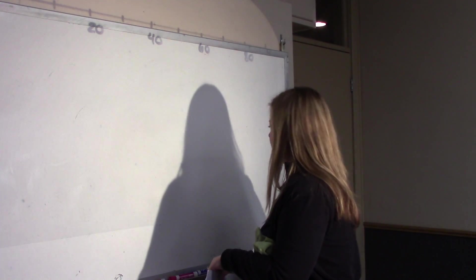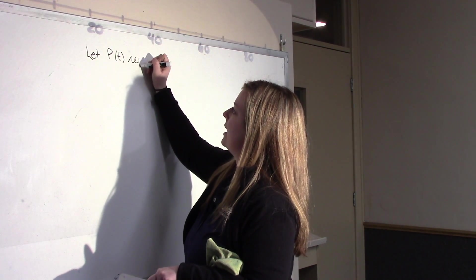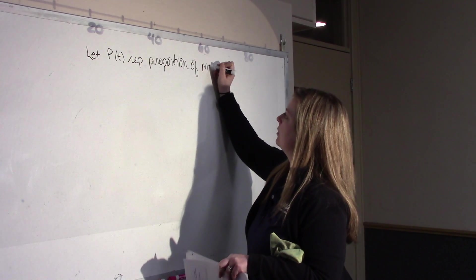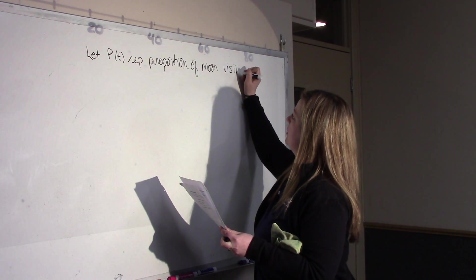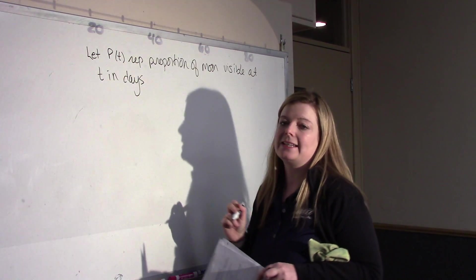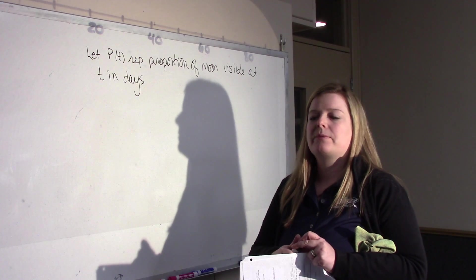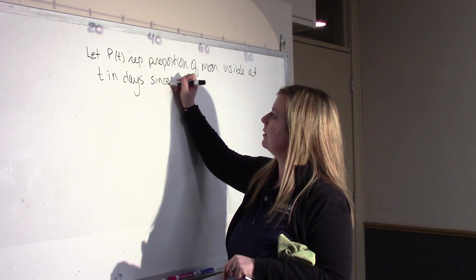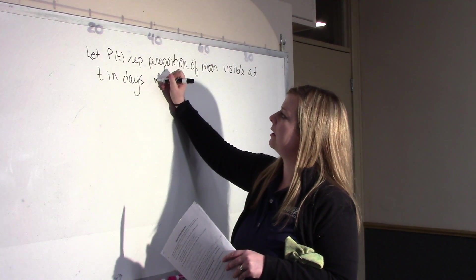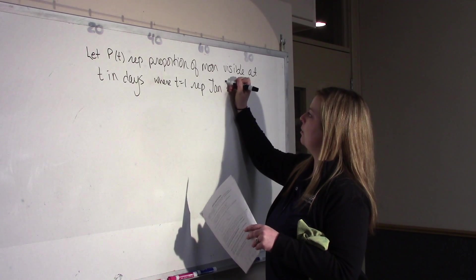So, we need to identify our variables then. We'll say let P at T represent proportion of the moon visible at T in days. But I can't just say T in days because what does that mean? Does that mean days from today, days in the month of January? So, we have to say days since, T in days where T equals 1 represents January 1, 2006.